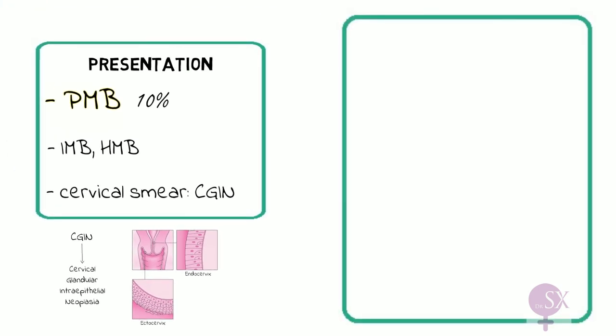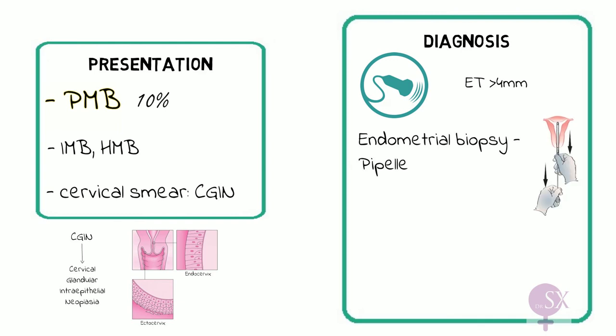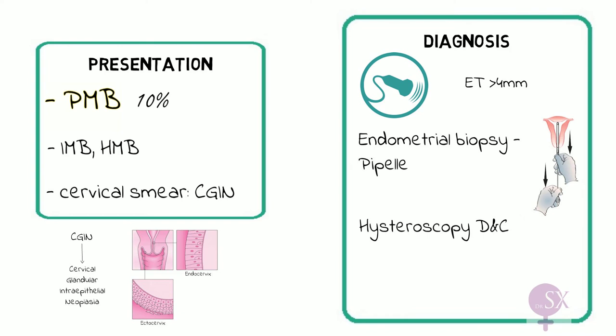To diagnose endometrial cancer, we first perform a transvaginal ultrasound to assess the thickness of the endometrial lining. An endometrial thickness greater than 4 mm in a postmenopausal woman is considered thick, requiring further investigation involving taking a sample. An endometrial sample can be taken using a pipelle, but the gold standard for diagnosis is performing a hysteroscopy and D&C, where we visualise the lining and take a sample to send to the lab.